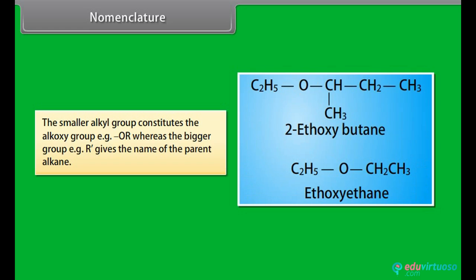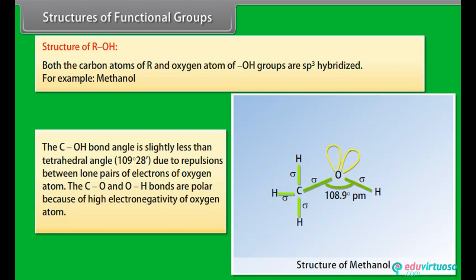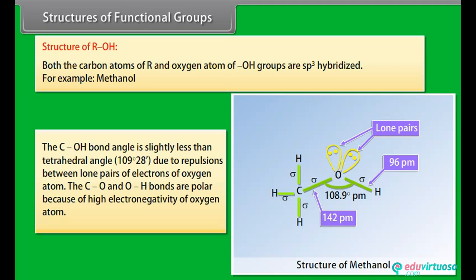Structure of R-O-H. Both the carbon atoms of the alkyl group and the oxygen atom of the hydroxyl group are sp3 hybridized. For example, in methanol, the C-O-H bond angle is slightly less than the tetrahedral angle of 109°28' due to repulsions between the lone pairs of electrons on the oxygen atom. The C-O and O-H bonds are polar.